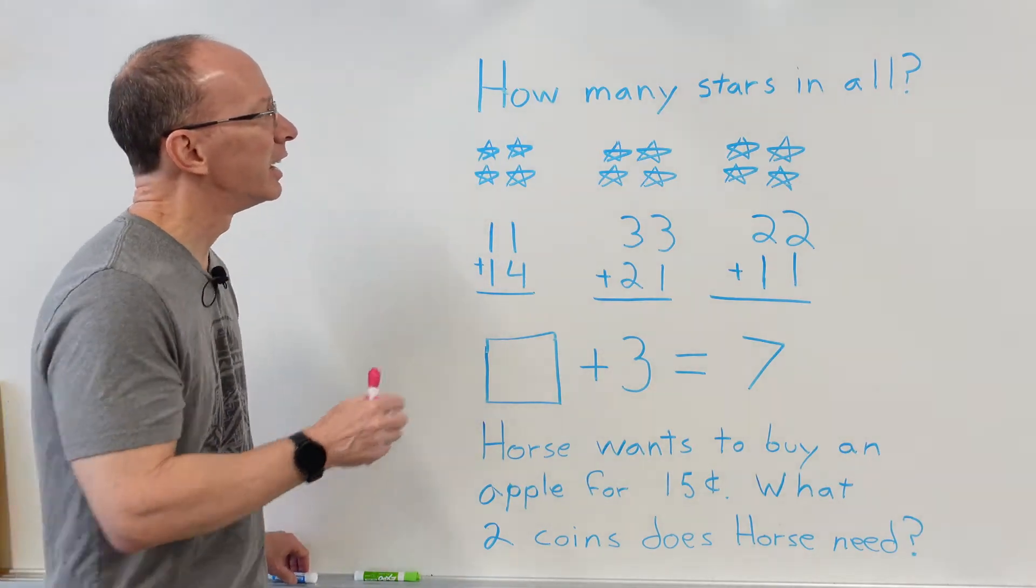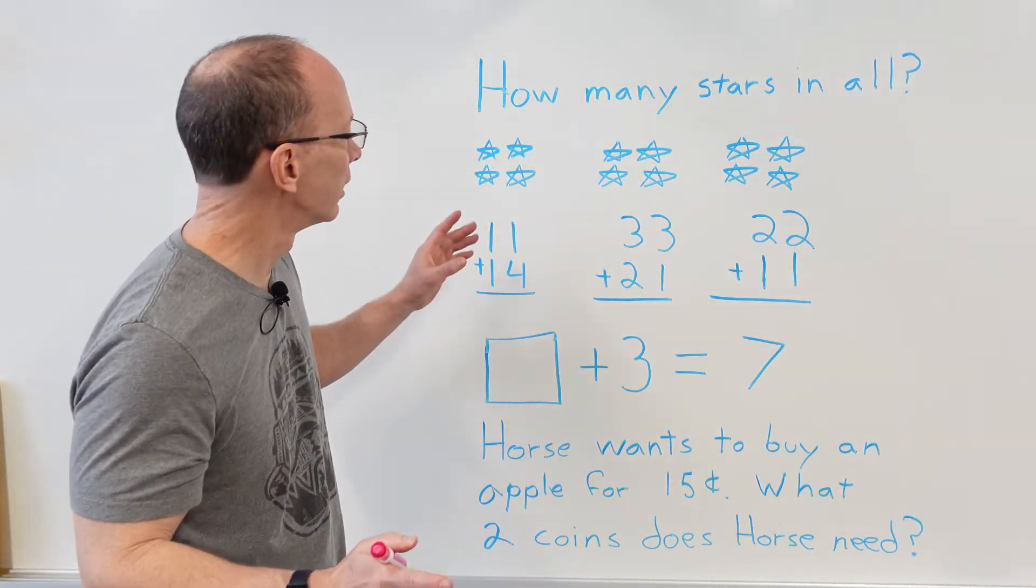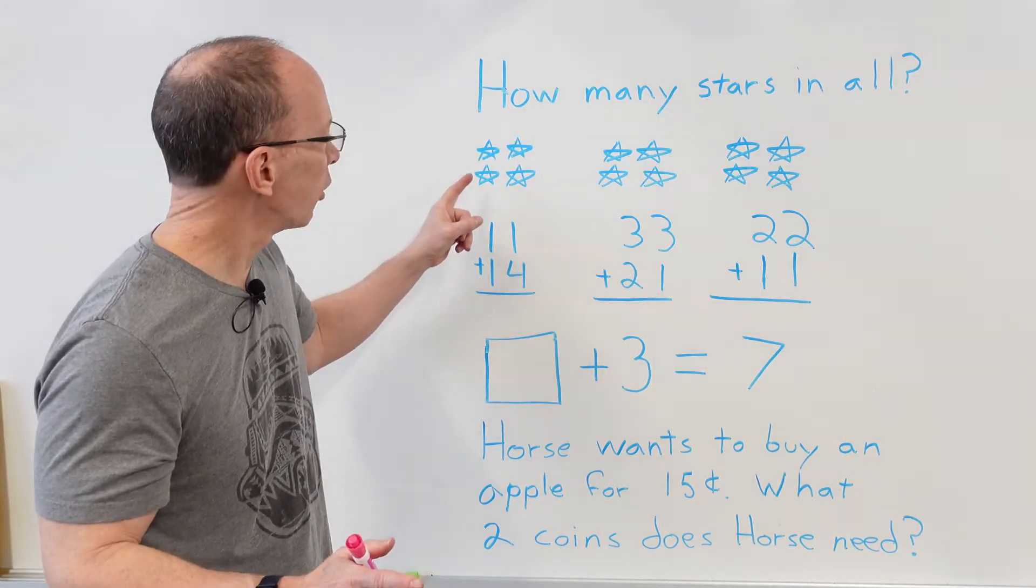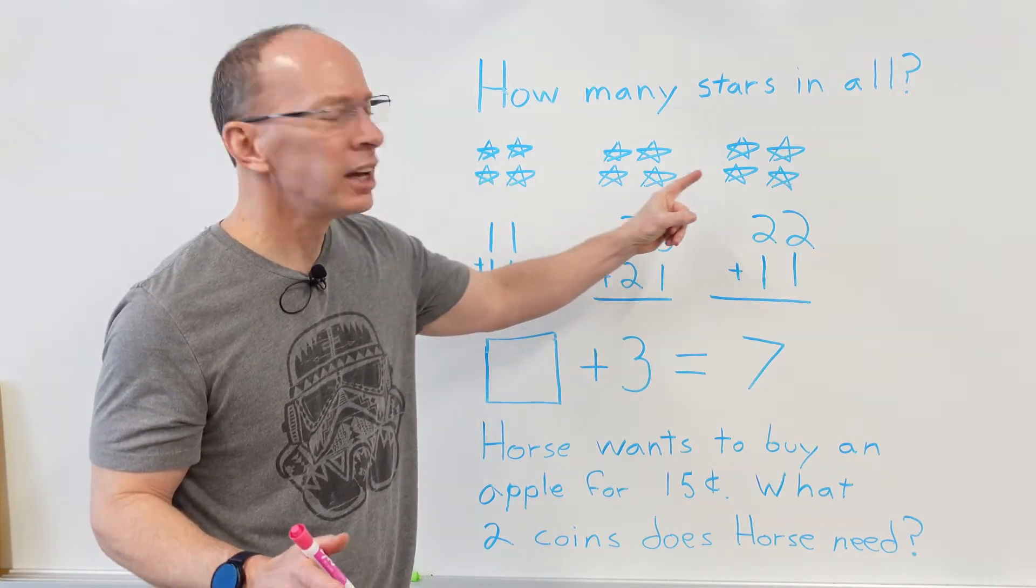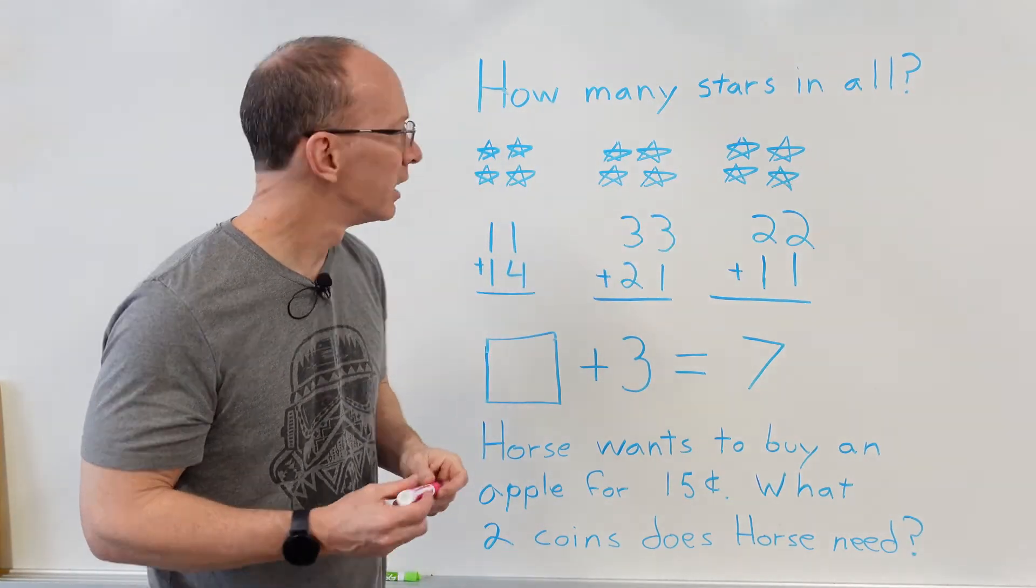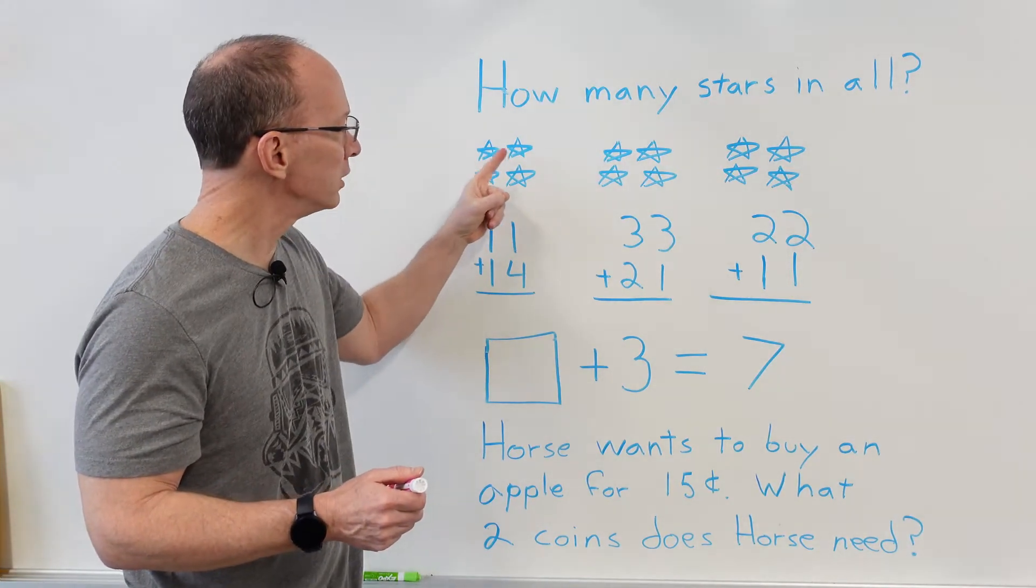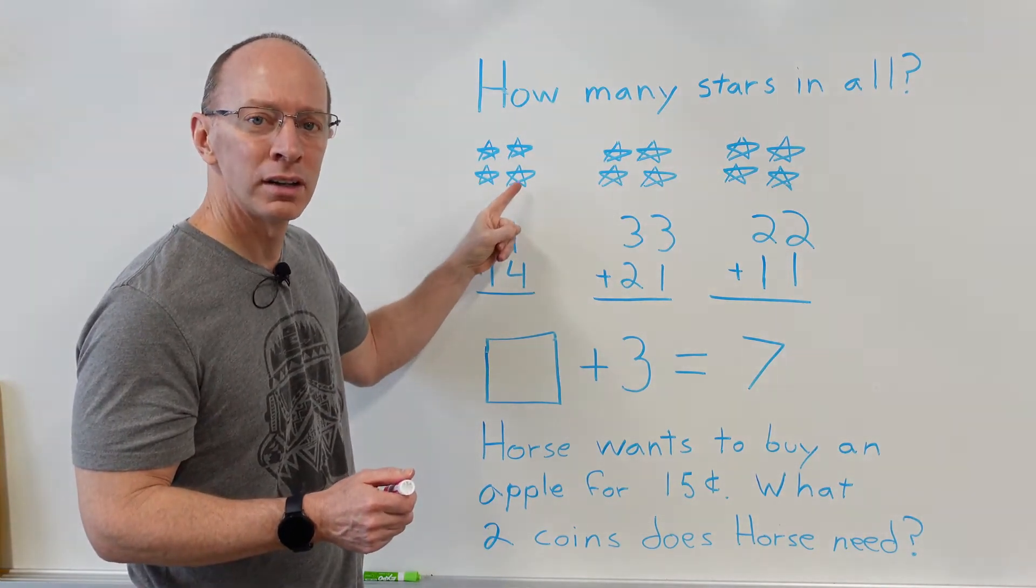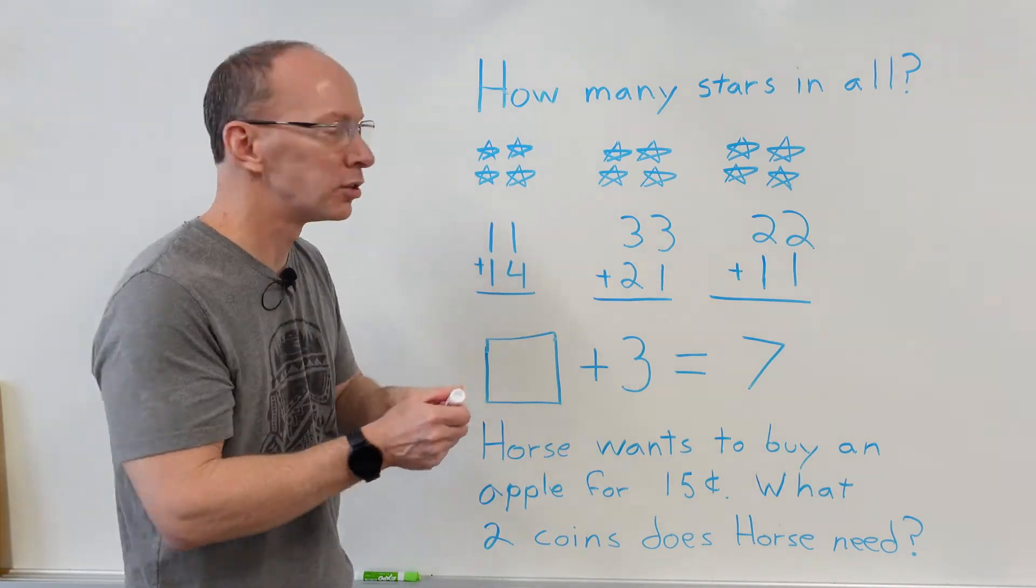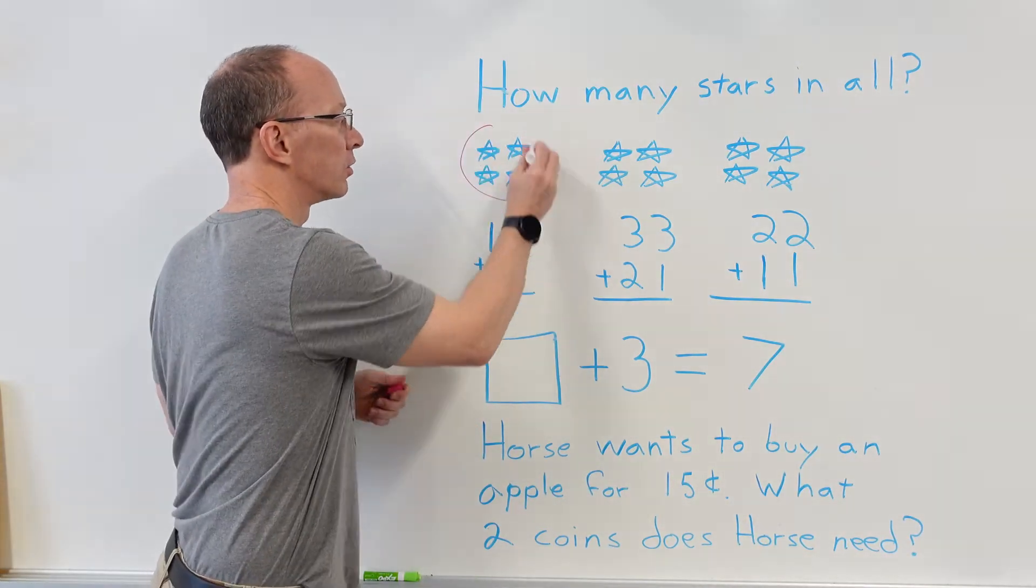All right, let's get started here. How many stars in all? Looks like I have almost like one, two, three groups, don't I? I have three groups, and in each of those groups how many stars are there? There's one, two, three, four. Sometimes what I like to do with a group is I like to circle the group.